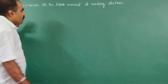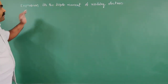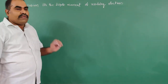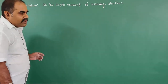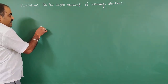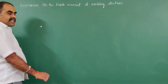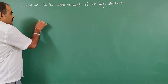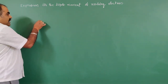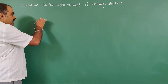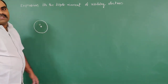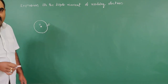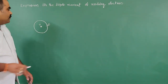Now I want to derive the expression for the dipole moment of a revolving electron. In atoms, at the center the nucleus is present — represented with capital M. Electrons continuously move in circular orbits around the nucleus. The charge of the electron is represented by e, and the radius of the circular orbit is small r.